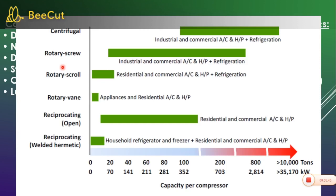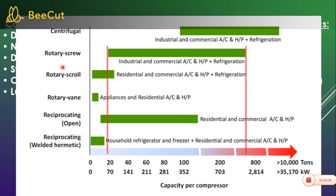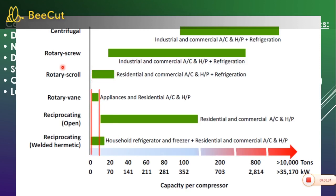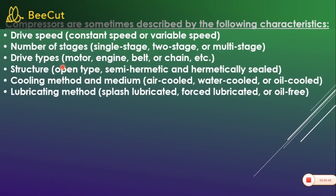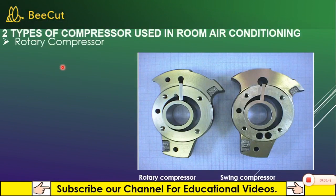This chart shows the capacity range for each compressor type. Centrifugal compressors handle the highest capacity. Rotary screw type handles high capacity — less than 800 tons, from start to 800 tons. Rotary scroll is used in residential applications and in VRF or VRV systems. Rotary vane type is used in room AC and window AC for residential use, and the rotary compressor is used in refrigerators.